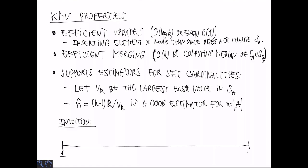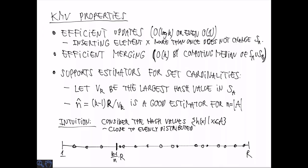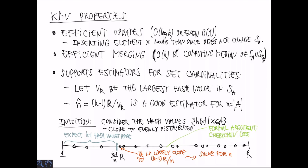The intuition is the following. Let's look at all the possible hash values between 1 and R and we can think about the distribution of these hash values. Because the hash function is supposedly random, these are close to evenly distributed. If we look at a particular interval, for example, the one between 1 and K minus 1 over n times R, we can compute how many elements are expected. For this particular interval, the expected number of hash values is K minus 1. This means that if we take the Kth smallest hash value, it's likely to be just to the right of this interval. That is, it's a good estimator for the location of this interval. And now we can solve for n and get our estimate of n based on the observed value of VK.